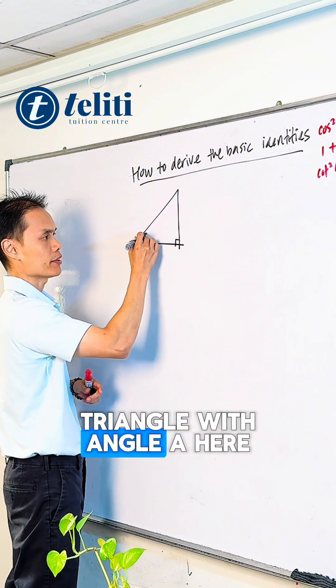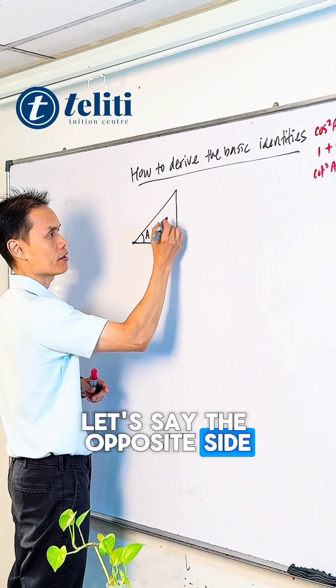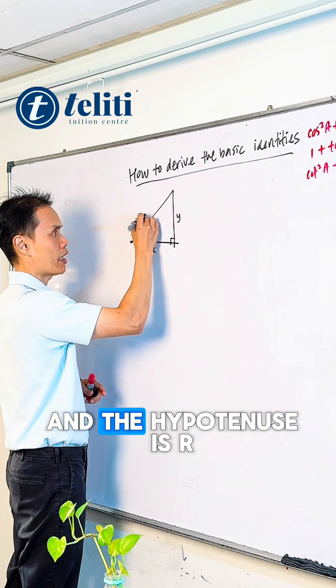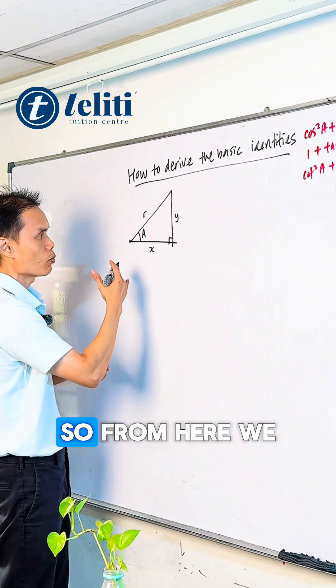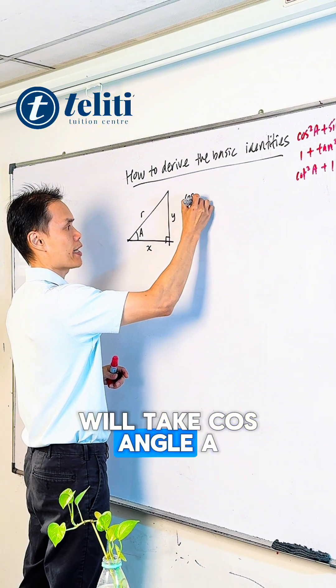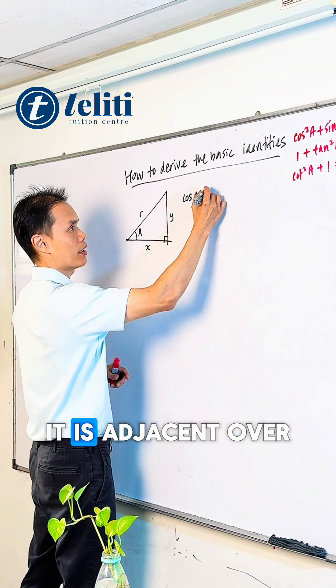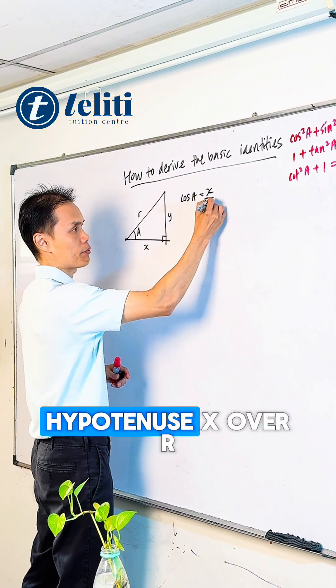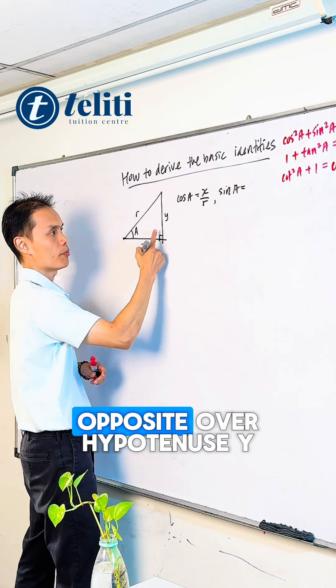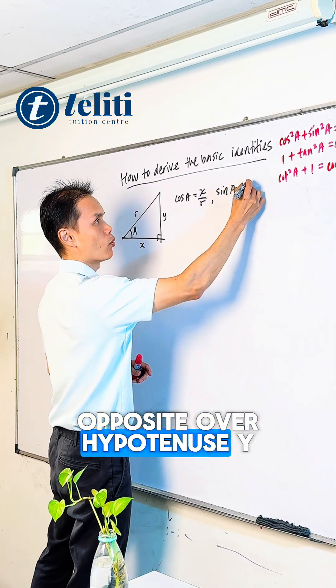Let's say you have a right angle triangle with angle A. The opposite side is Y, the adjacent is X, and the hypotenuse is R. From here, we know that cos(A) is adjacent over hypotenuse, X/R, and sin(A) is opposite over hypotenuse, Y/R. We begin with this.